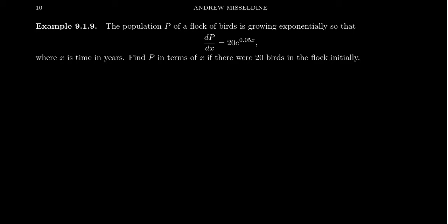In this video, suppose that the population P of a flock of birds is growing exponentially so that dP/dx equals 20e^(0.05x), where x is measured in years.